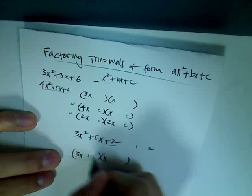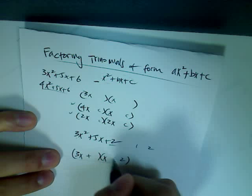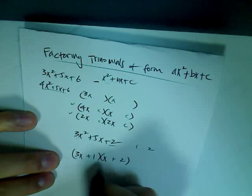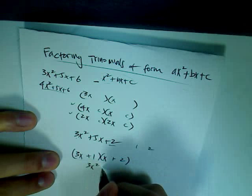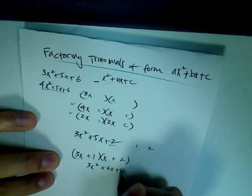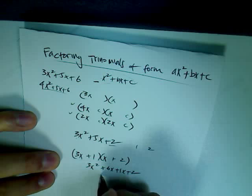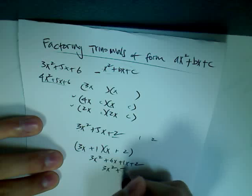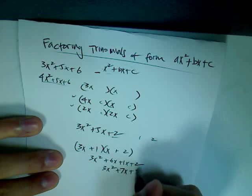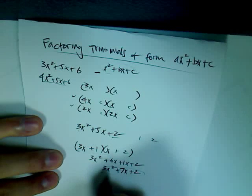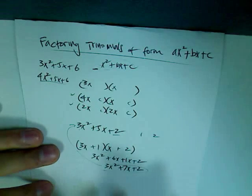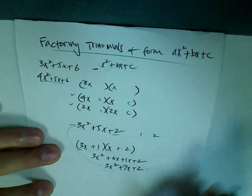Let's try putting the 2 with the x term and the 1 with the 3x term. When you expand this out, you get 3x squared plus 6x plus 1x plus 2, which simplifies to 3x squared plus 7x plus 2. But this does not equal the original equation, so we have to change the order of the numbers.